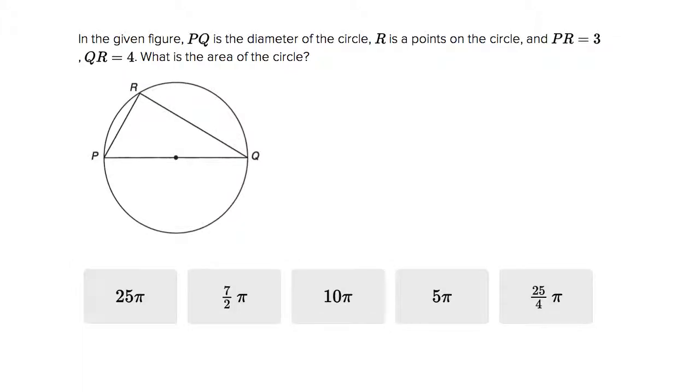We're dealing with a circle and triangles question here. Let's take all the info they give us and make sure it's on the chart. In the given figure, PQ is the diameter of the circle.